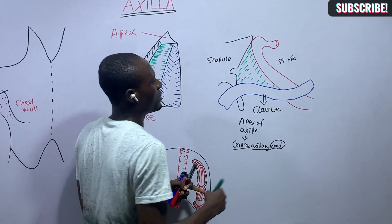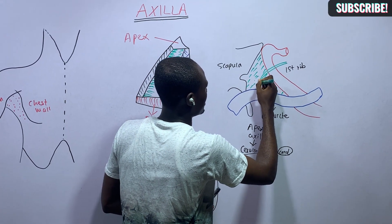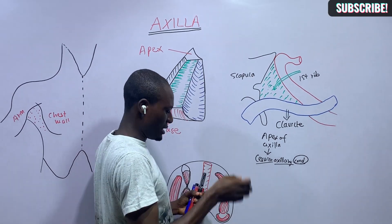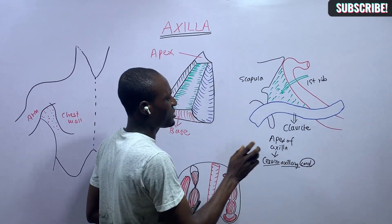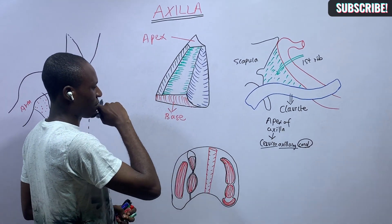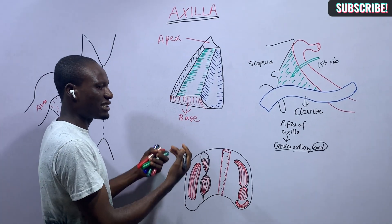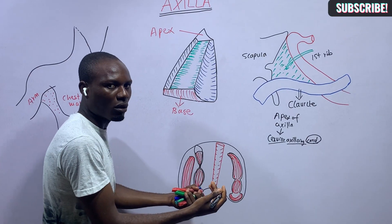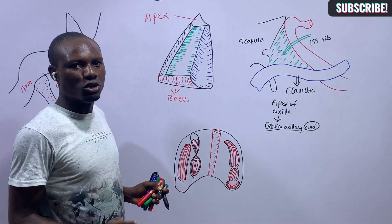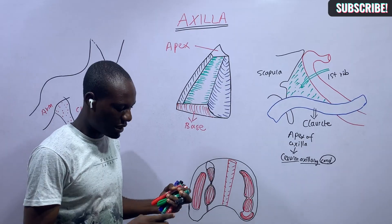Structures pass through this apex and get into the axilla. The boundaries of the axilla are its walls. The axilla has four walls: an anterior wall, a posterior wall, a medial wall, and a lateral wall — like a four-sided room.